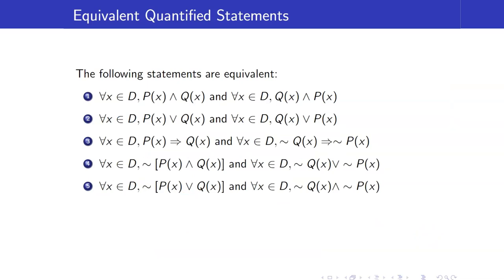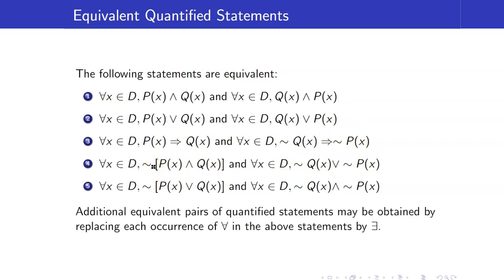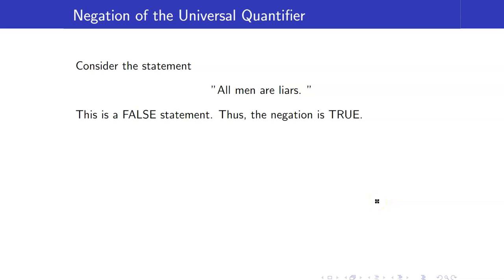Here are some equivalent quantified statements. These include equivalents we've seen before in previous lectures, except that instead of propositions P and Q, we now have open sentences P(x) and Q(x) with the universal quantifier. Conjunction and disjunction are commutative, the contrapositive of an implication holds, and De Morgan's Law applies. Additional equivalent pairs may be obtained by replacing the universal quantifier with the existential quantifier.